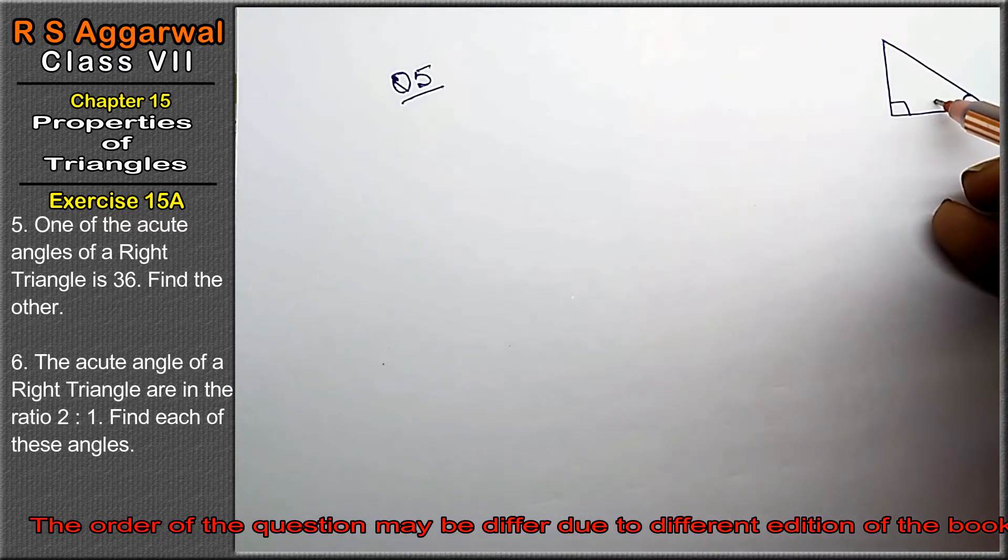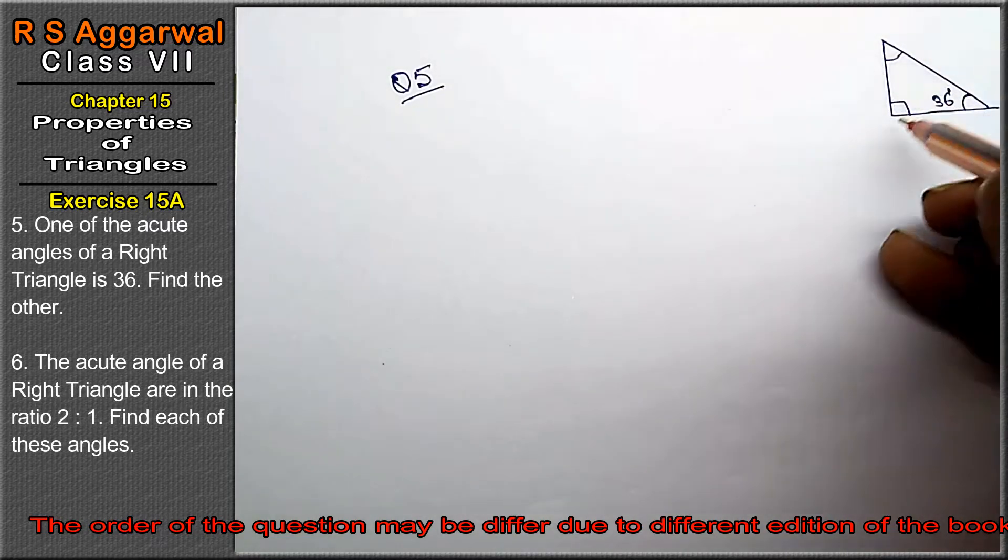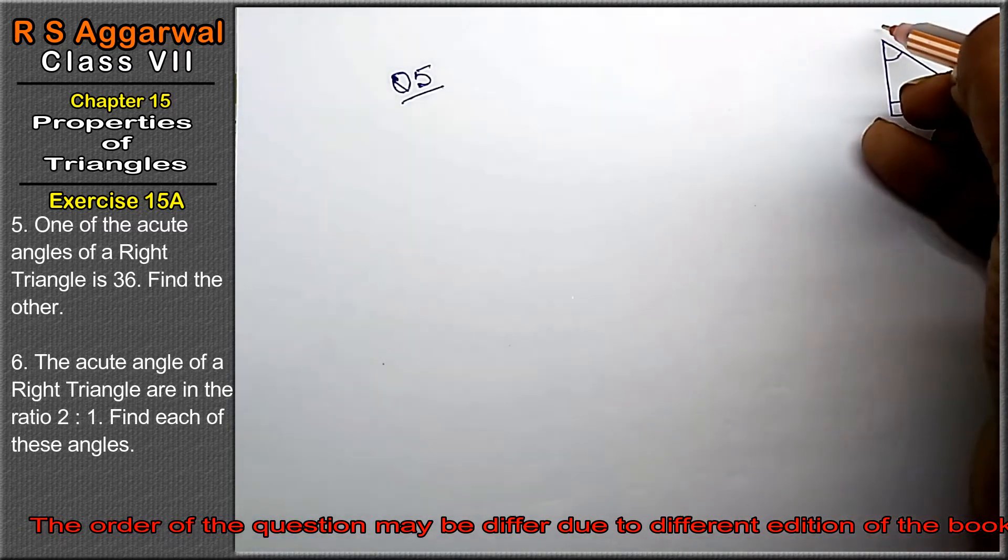One acute angle is 36 degrees. We need to find the other. We will take this angle, so let's label the angles A, B, and C.